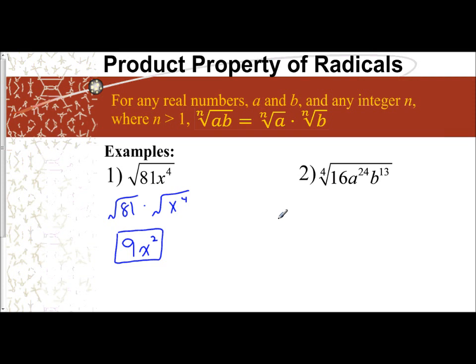So if you have the fourth root of 16a to the 24th b to the 13th, you split it across: the fourth root of 16, and for this one I'm going to split the fourth root across each variable, so the fourth root of a to the 24th and the fourth root of b to the 13th.